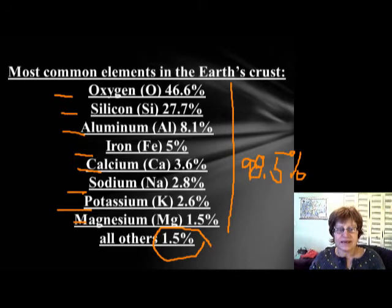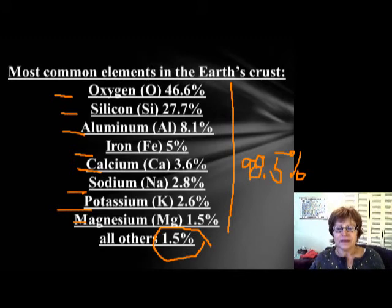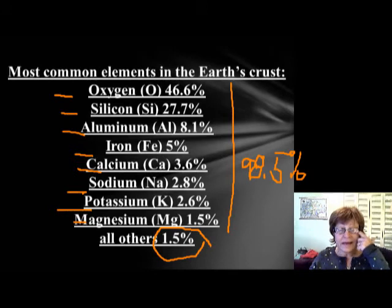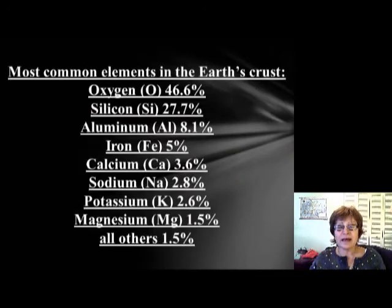I do want you to know these elements in order. You don't need to memorize the percentages, but you do have to know them in order: oxygen, silicon, aluminum, iron, calcium, sodium, potassium, magnesium. You also have to know the symbols, so if I put them in order with their symbols, you still have to understand it.